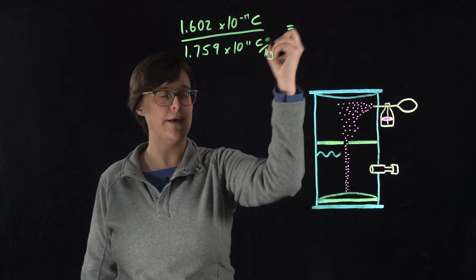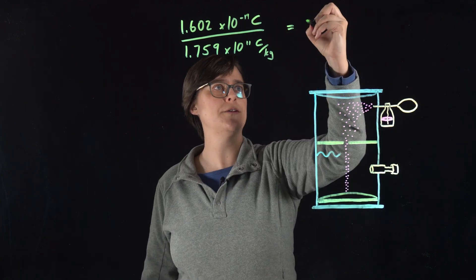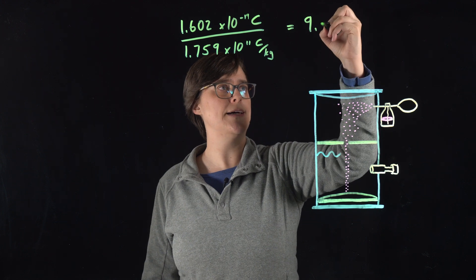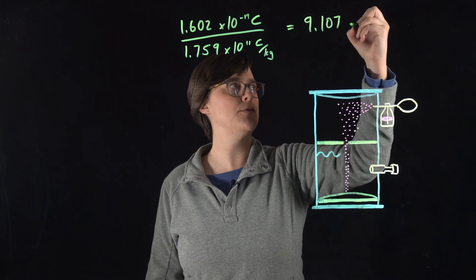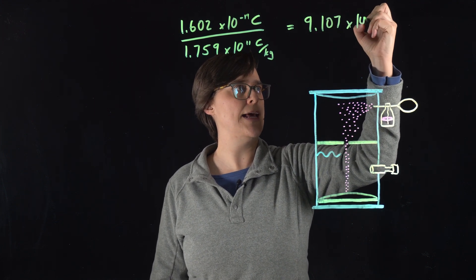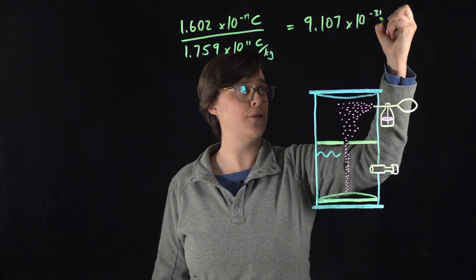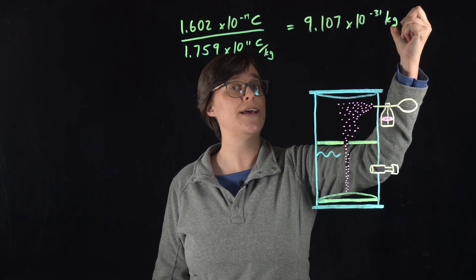And we calculate that the mass of one electron equals 9.107 times 10 to the minus 31st kg. That is tiny.